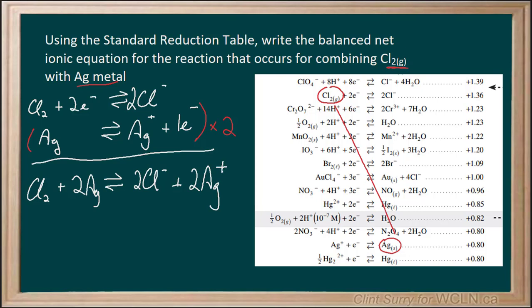And as I said, the electrons have canceled out. Now there's no spectators present here. So this would now be the balanced net ionic equation for the combination of these two in a redox reaction.